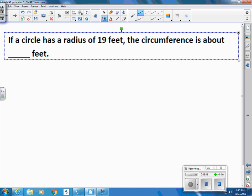If a circle has a radius of 19 feet, the circumference is about what? So the radius is that, and that's going to be 19.